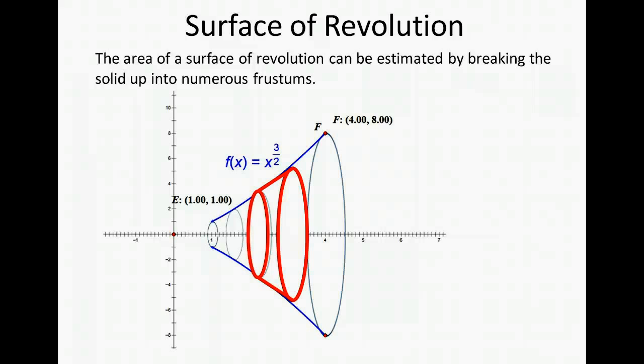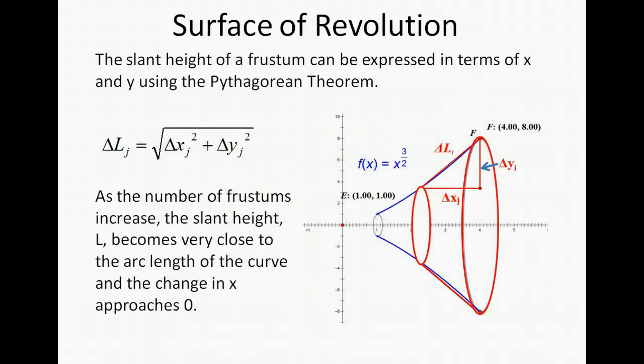To get the surface area of the frustum we need the slant height and we need the average radius. We can find the slant height of the frustum in terms of x and y just by using the Pythagorean theorem.